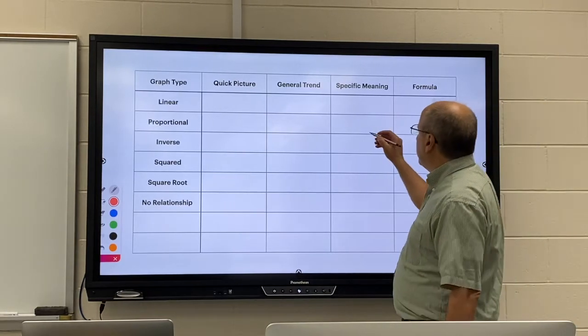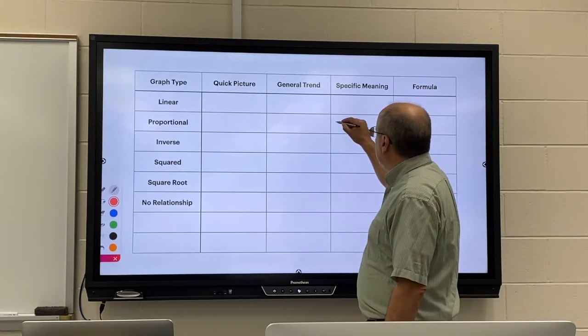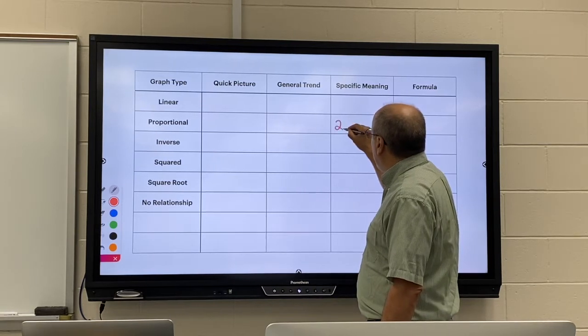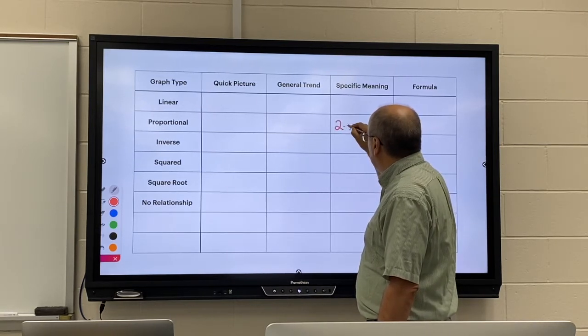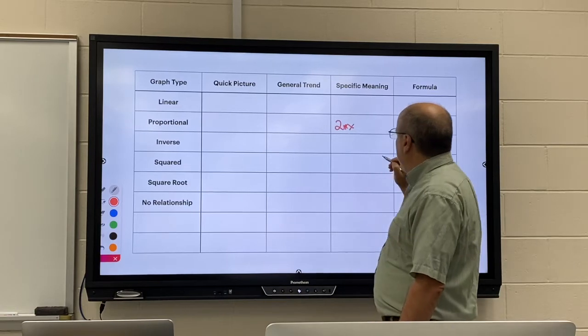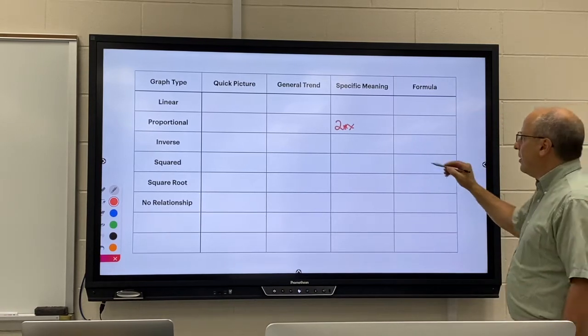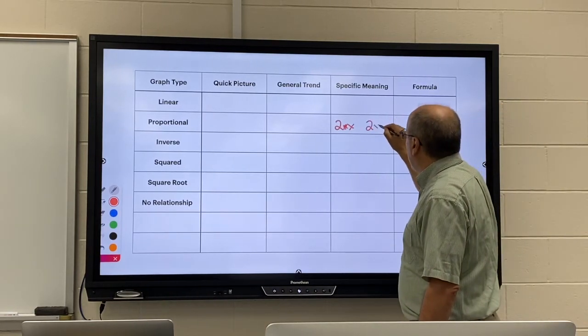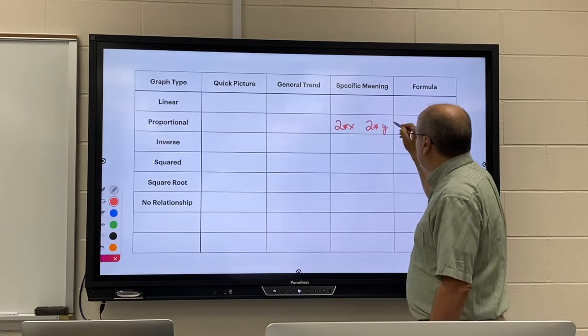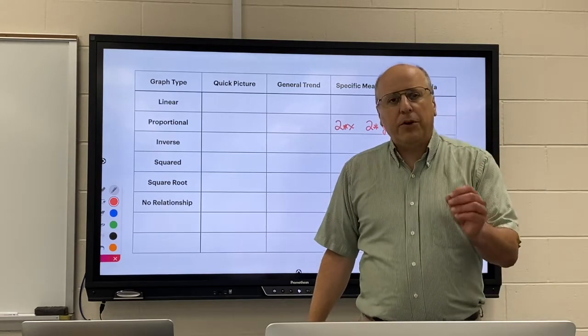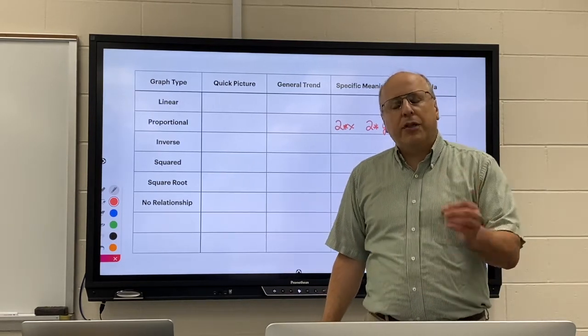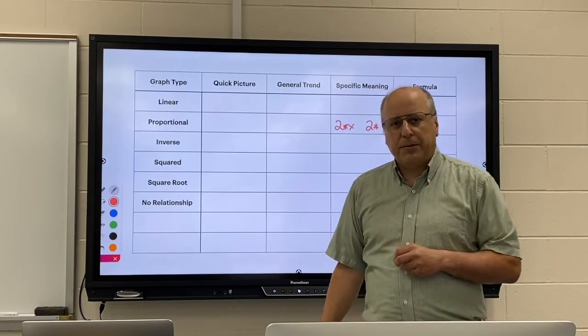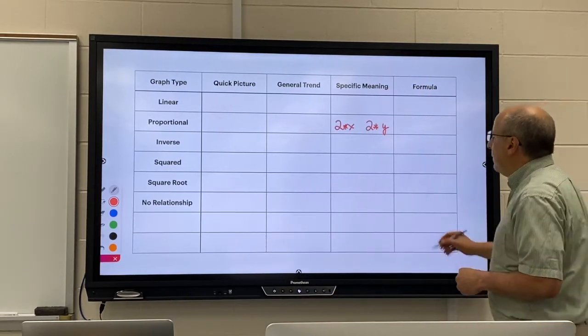For a proportional graph it means that if you two times X, you multiply X by two, you'll get two times the Y. That means if you double your X variable, you'll double your Y variable.